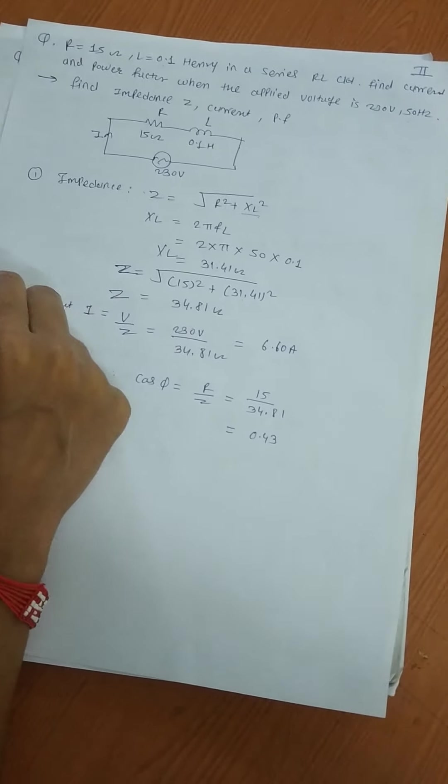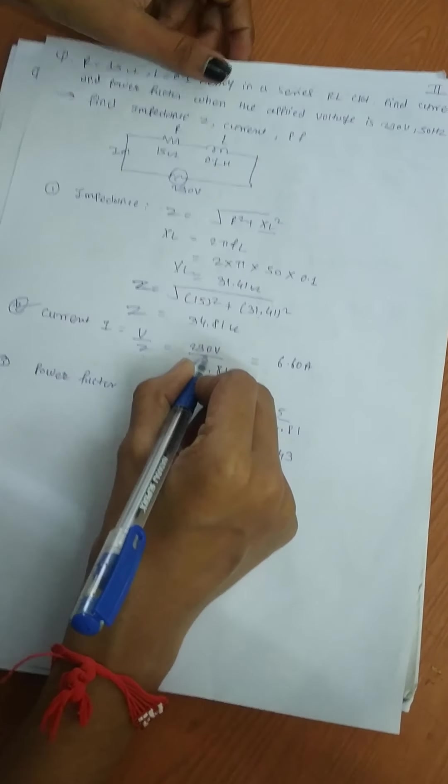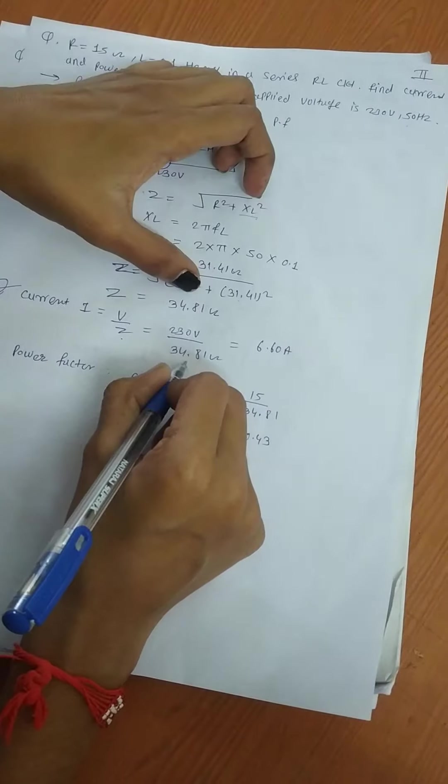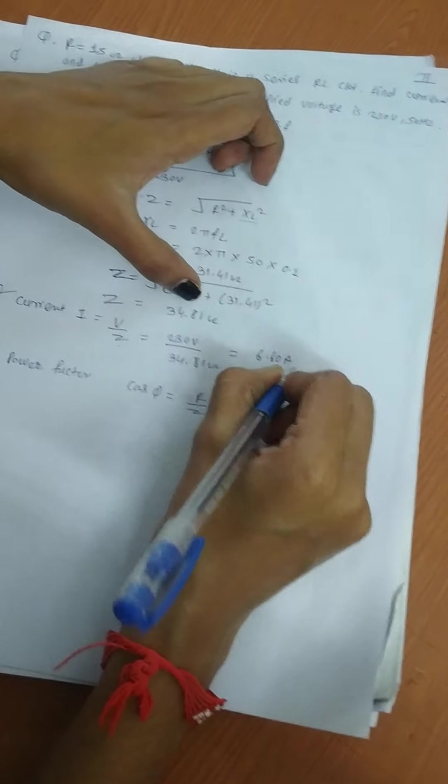Next, find current. I = V/Z. The value of V is 230 volt and Z is 34.81, therefore the current is 6.60 ampere.